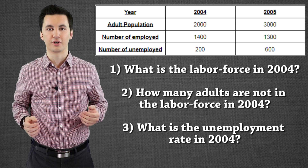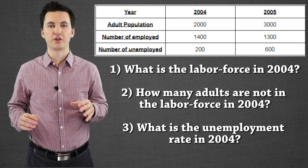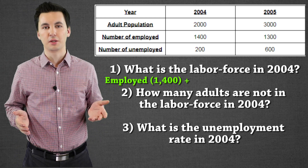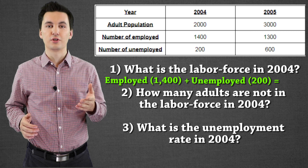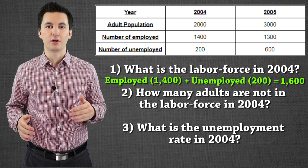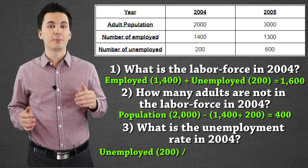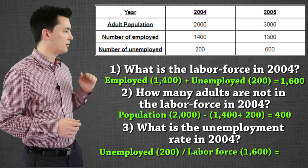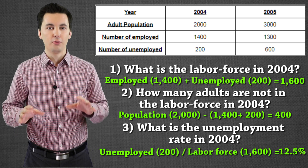Alright, let's go over the total labor force. To find it, we take our employed and unemployed and add them together. Looking at the chart, I can see 1,400 people employed and 200 people unemployed. Adding the two together gives us a total labor force of 1,600. Now I can figure out the unemployment rate. We take the 200 unemployed and divide by the total labor force of 1,600. This gets us an unemployment rate of about 12.5 percent.